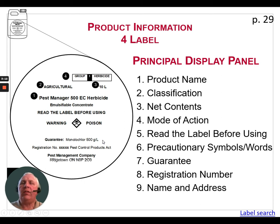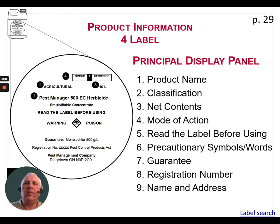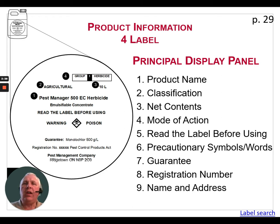You'll also see the guarantee — in this case it's monochlorol at 500 grams per liter, which is the active ingredient and its strength. If it's a multi-ingredient product, all active ingredients will be listed. You'll also see a registration number, also called the pest control product act number. These terms are used interchangeably; it's always a unique number specific to the company and the chemistry being used.